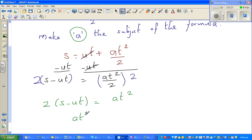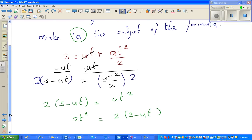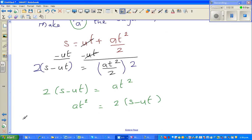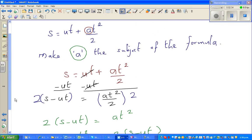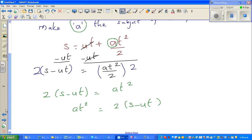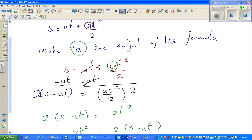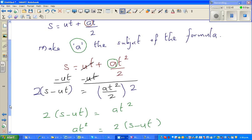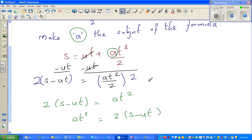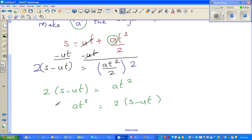Let me rewrite: at squared equals 2 times s minus ut. Now finally I want to get rid of this t squared. If you've seen the logic of what I've done, I'm isolating, not doing anything to this. I want this alone on one side. First step, I eliminated ut by taking away ut from both sides. Second step, I eliminated this 2 by multiplying 2 on both sides.